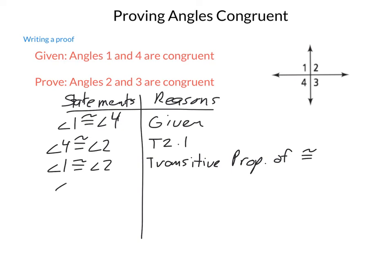Then, we can make the statement that angle 1 is congruent to angle 3, and that is using, again, vertical angles, or theorem 2.1, or vertical angle theorem.